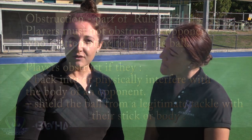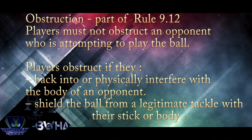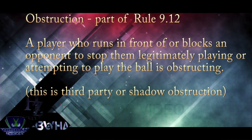Returning to the rule book, rule 9.12: players must not obstruct an opponent who is attempting to play the ball. Players obstruct if they back into an opponent, physically contact the body of an opponent, or shield with any part of their body. Regarding third-party obstruction, a player who runs in front of or blocks an opponent to stop them legitimately playing or attempting to play the ball is obstructing. This is third-party or shadow obstruction.